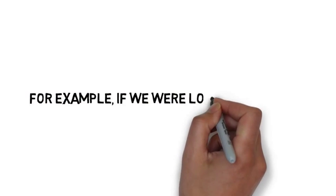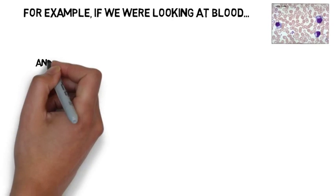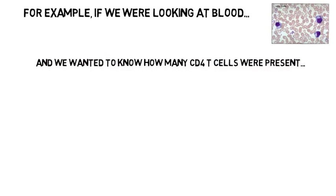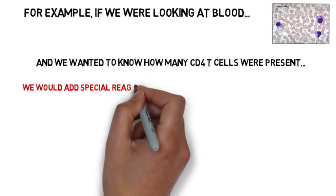For example, let's say that we wanted to know how many CD4 positive T cells were in someone's blood. First, we would take the blood, process it, and then run it through a flow cytometer and read the result.